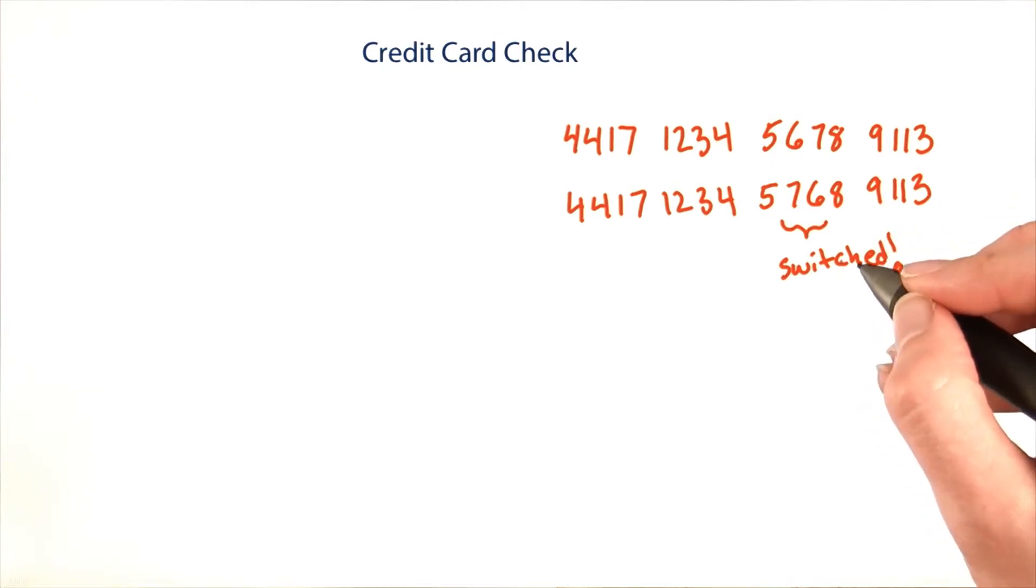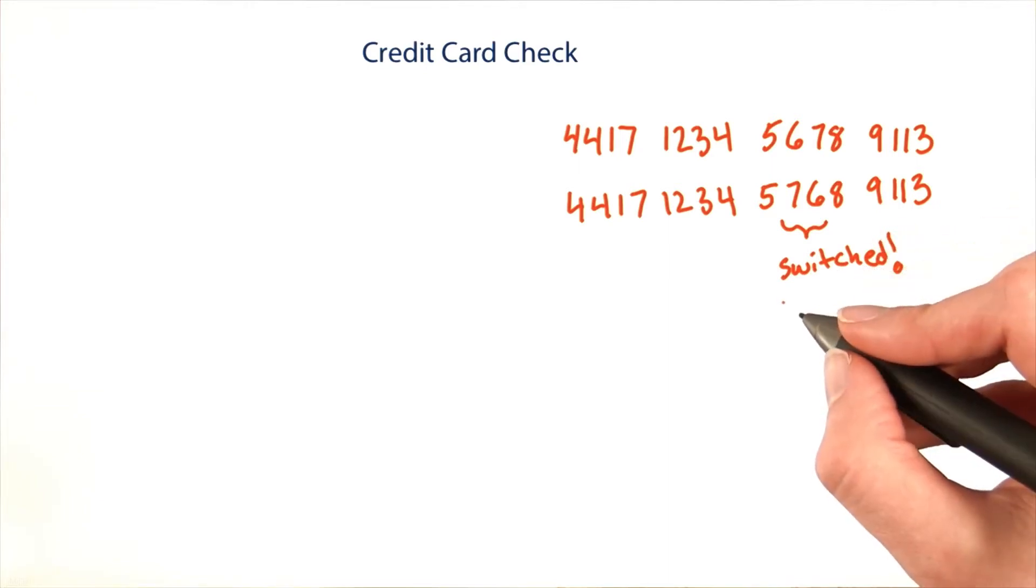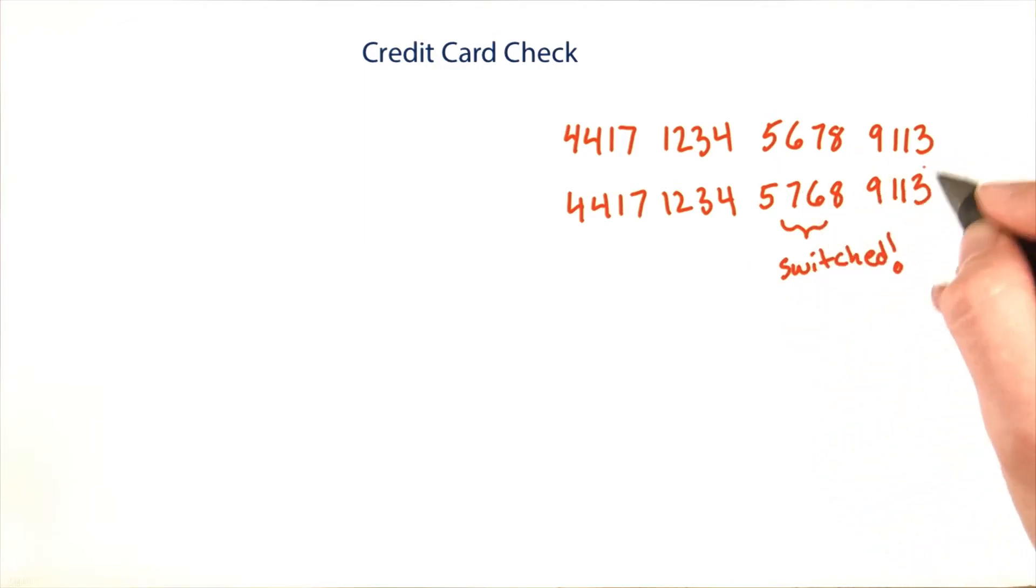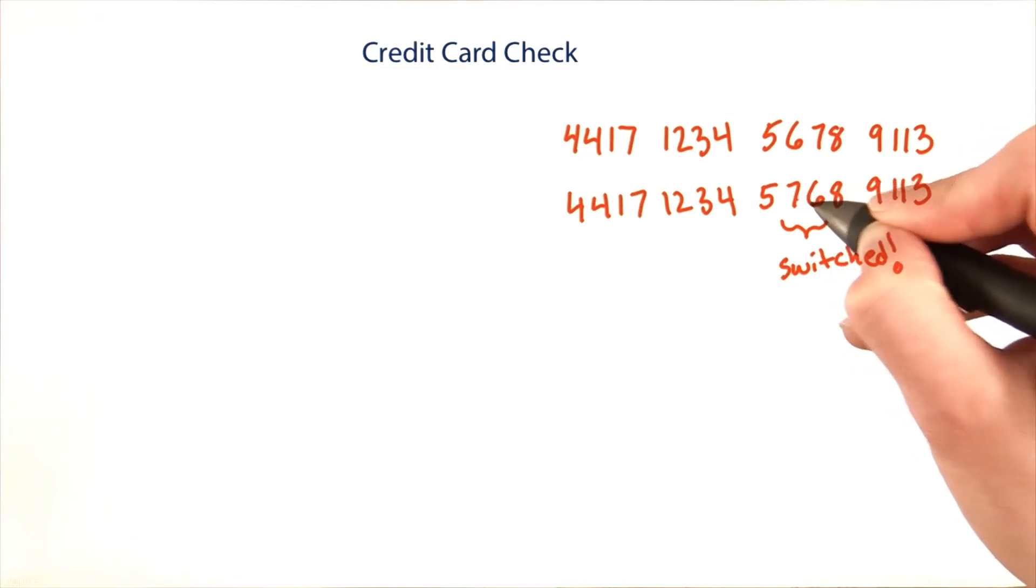Luckily, the designers of credit cards back in the day thought about this. All credit card numbers have to follow a kind of pattern. And there's an algorithm that uses the pattern to figure out if a customer has accidentally switched two numbers in their credit card.